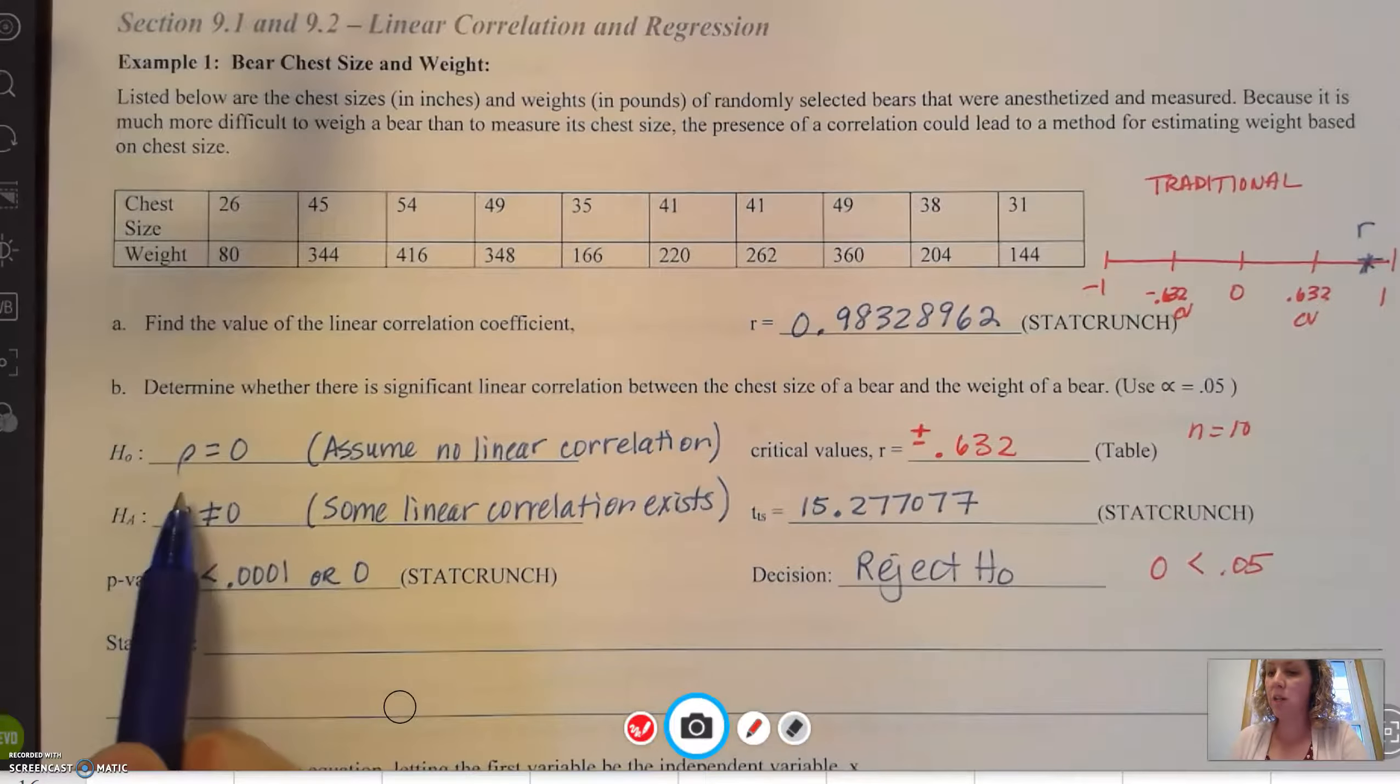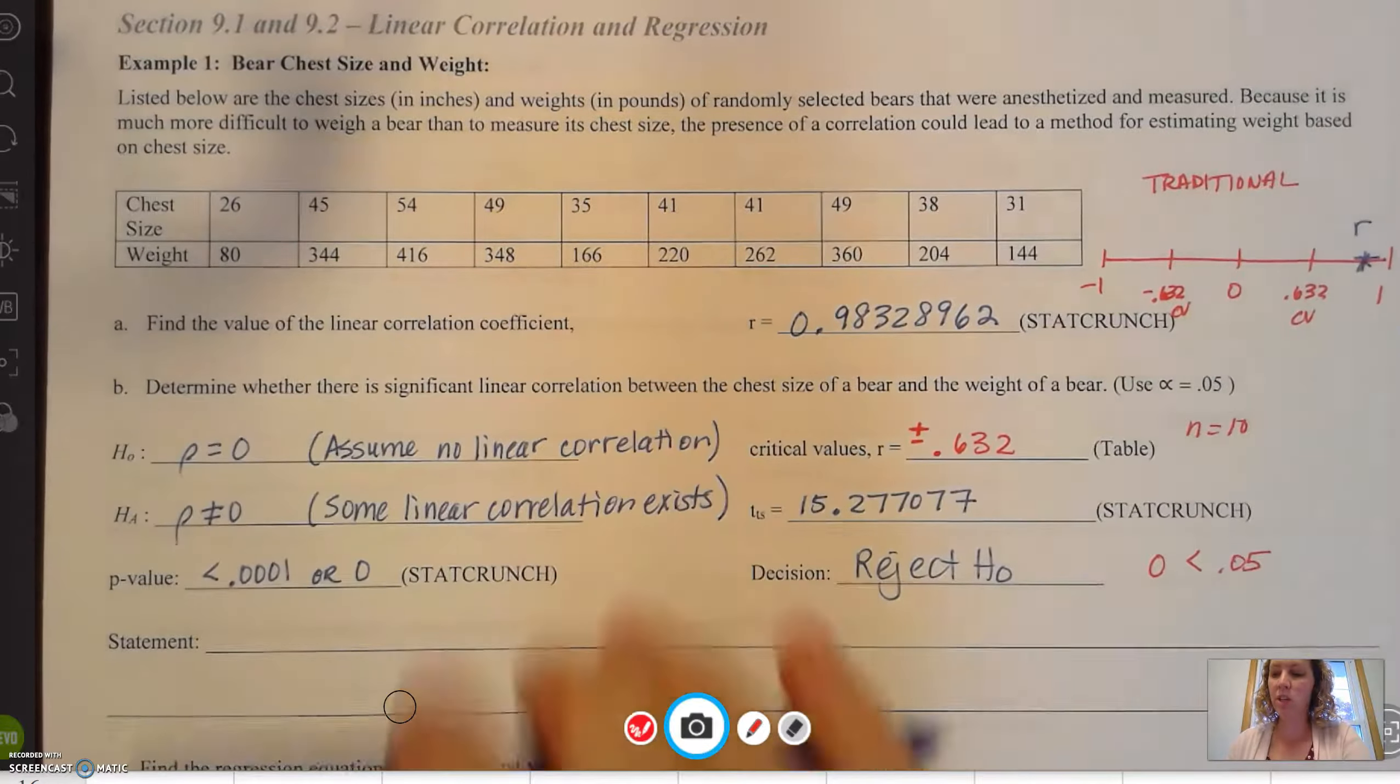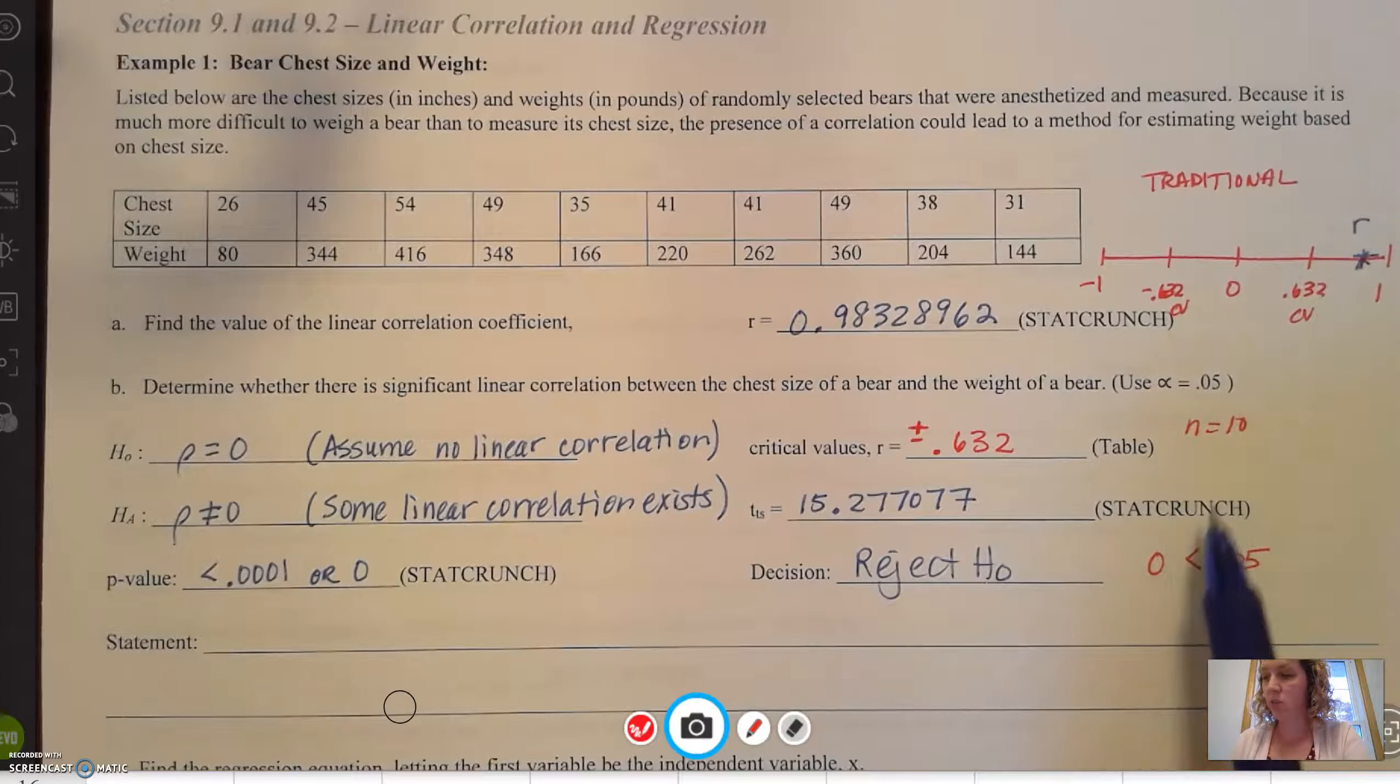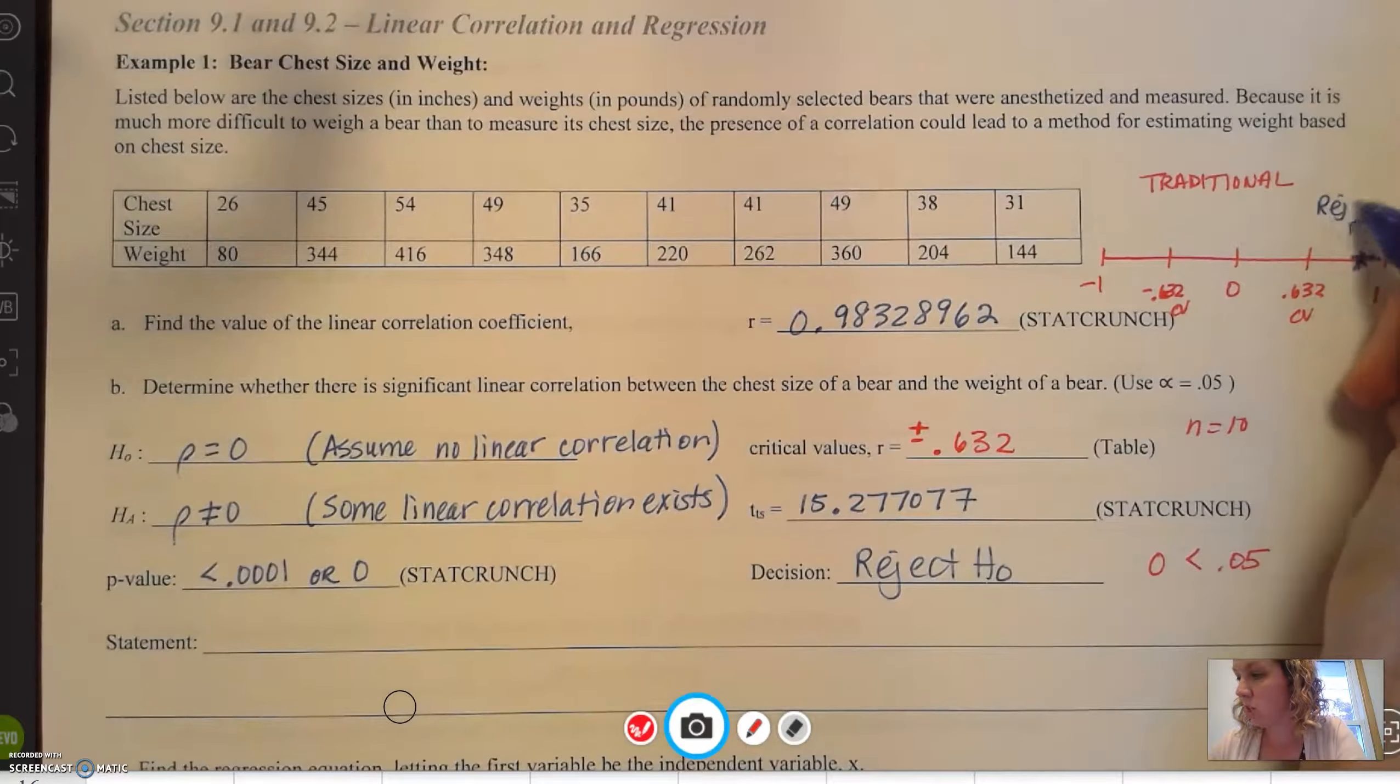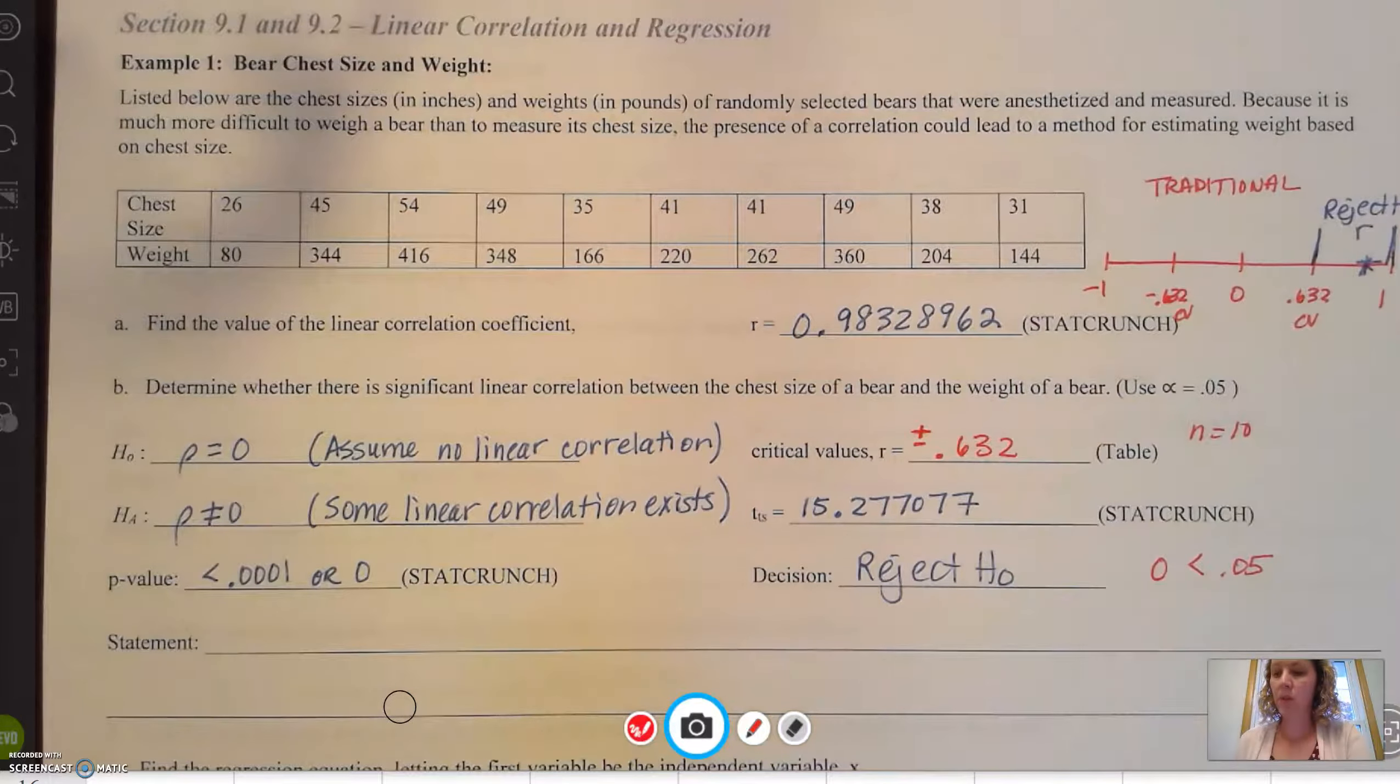If we're rejecting the null hypothesis, remember the null hypothesis was ρ = 0. So if we reject that fact, that's not right, and so that means some linear correlation is going to exist. That verified us in the traditional method as well. Remember, this is also the rejection region between the critical value and one in the traditional method.